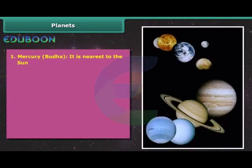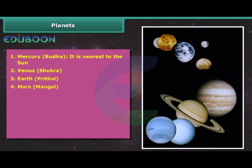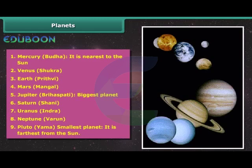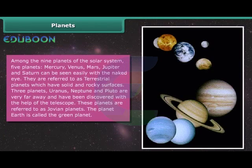Mercury (Buddha), it is the nearest to the Sun. Venus (Shukra), Earth (Prithvi), Mars (Mangal), Jupiter (Brihaspati), biggest planet. Saturn (Shani), Uranus (Indra), Neptune (Varun), Pluto (Yama), smallest planet. It is farthest from the Sun. Among the nine planets of the solar system, five planets Mercury, Venus, Mars, Jupiter and Saturn can be seen easily with the naked eye. They are referred to as terrestrial planets which have solid and rocky surfaces. Three planets Uranus, Neptune and Pluto are very far away and have been discovered with the help of the telescope. These planets are referred to as Jovian planets. The planet Earth is called the Green Planet.